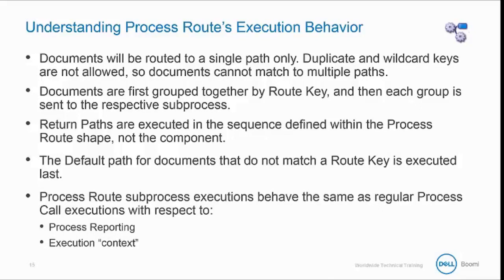Process route subprocess executions behave the same as regular process call executions with respect to process reporting. Pass-through subprocesses are logged as a continuation of the main process, and there is not a separate execution record. Non-pass-through subprocesses will create a separate execution record. The execution context is shared, so things like process properties and document caches are available and can be modified between the main process and the subprocess.